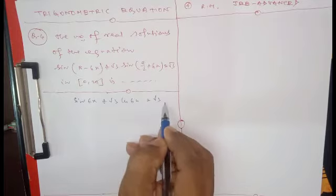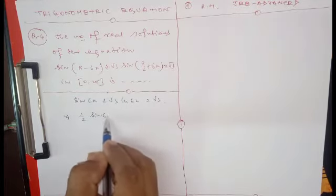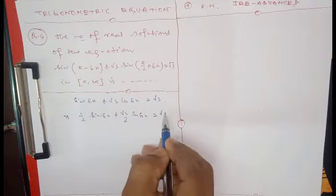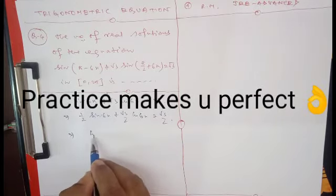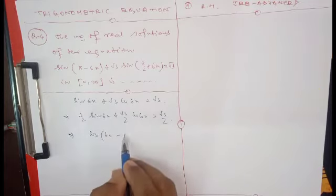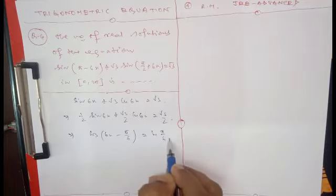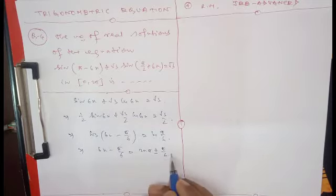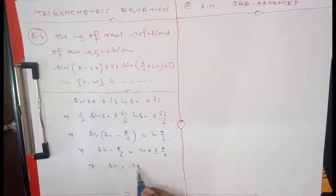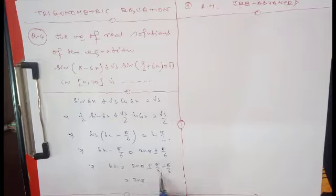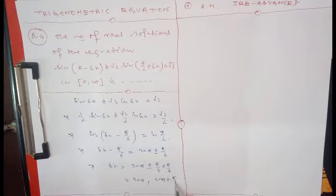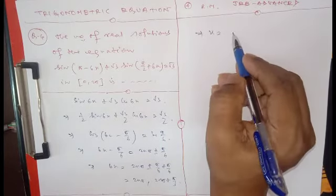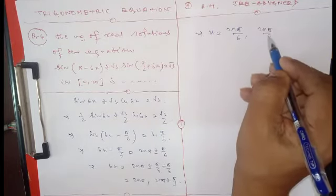Applying the identities sin(π - θ) = sin θ and sin(π/2 + θ) = cos θ, the equation reduces to sin(6x) + √3·cos(6x) = √3. Multiply both sides by 1/2: (1/2)sin(6x) + (√3/2)cos(6x) = √3/2. This can be written as sin(6x + π/3) = cos(π/6), giving cos(6x - π/6) = cos(π/6). So 6x - π/6 = 2nπ ± π/6, hence x = nπ/3 or x = nπ/3 + π/18.